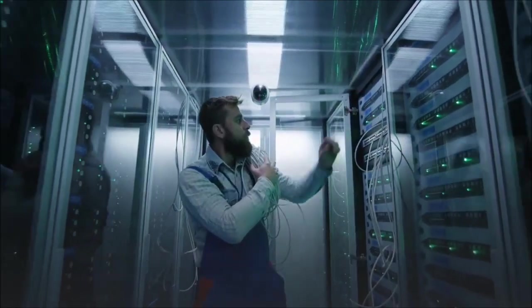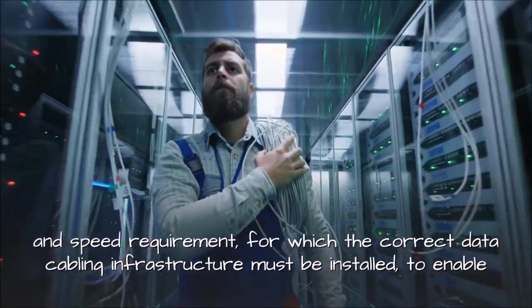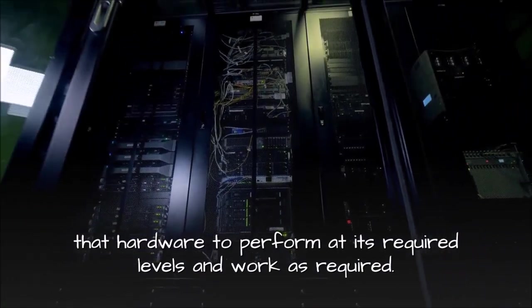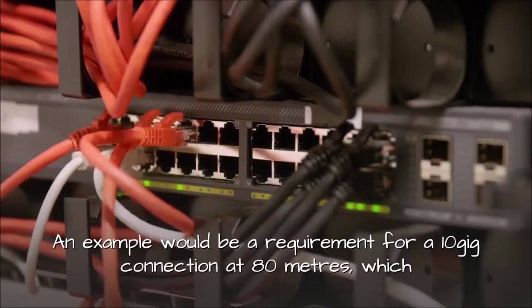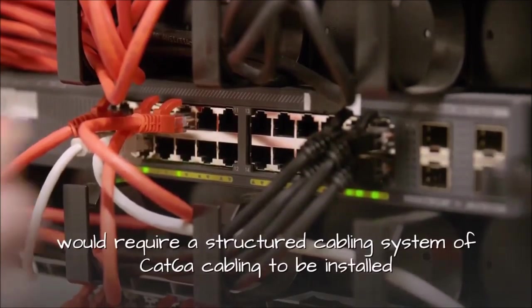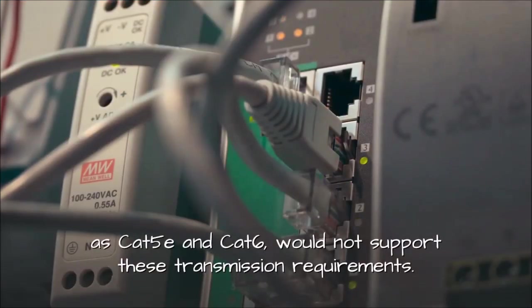All hardware has a bandwidth and speed requirement, for which the correct data cabling infrastructure must be installed, to enable that hardware to perform at its required levels and work as required. An example would be a requirement for a 10GB connection at 80m, which would require a structured cabling system of CAT6a cabling to be installed as CAT5e and CAT6 would not support these transmission requirements.